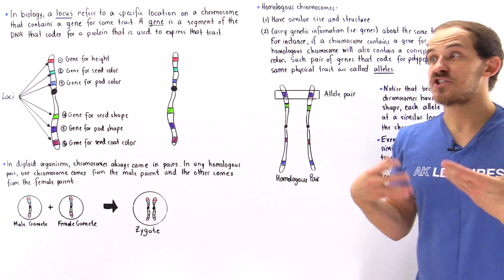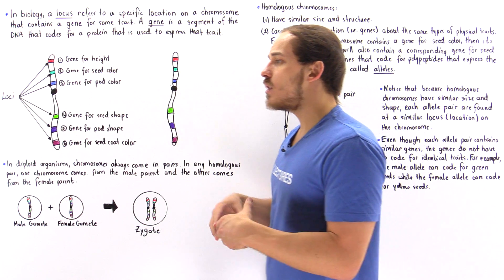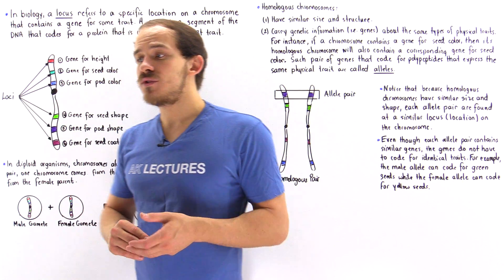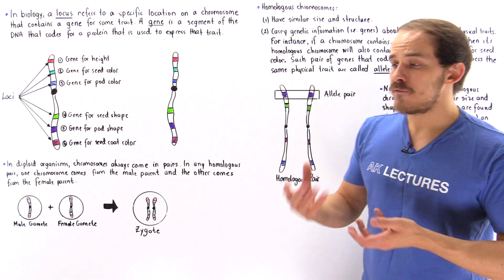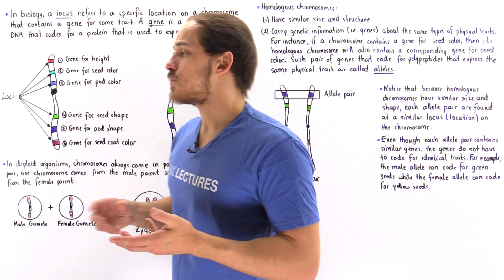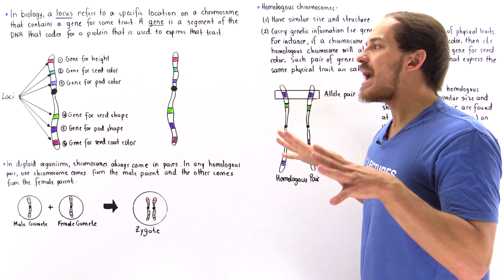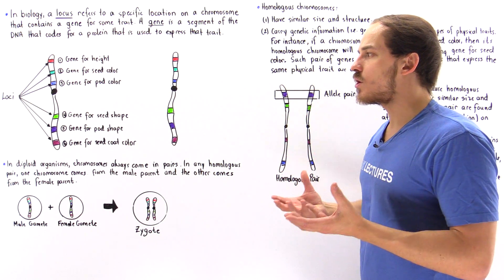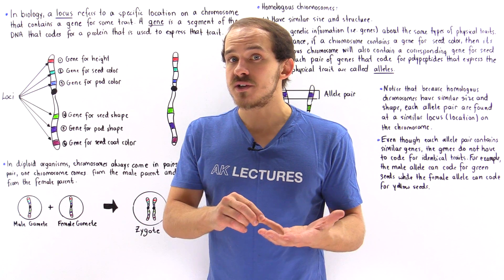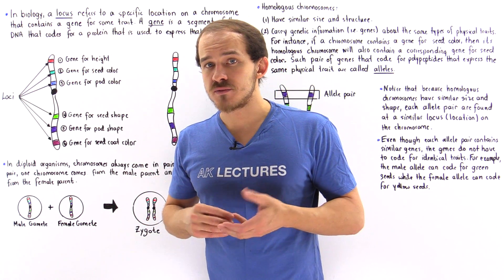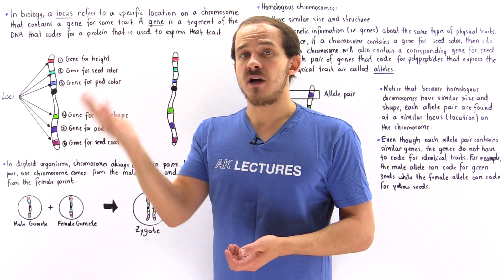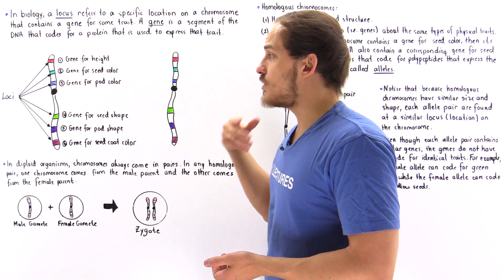What's special about DNA? DNA basically contains the code that cells use to create proteins, and proteins are important in forming different organelles within the cell as well as helping carry out different cellular processes. On the macroscopic level, proteins are used to express the different types of traits and characteristics found within a given organism — for example, the height of humans, eye color, hair color, and so forth.